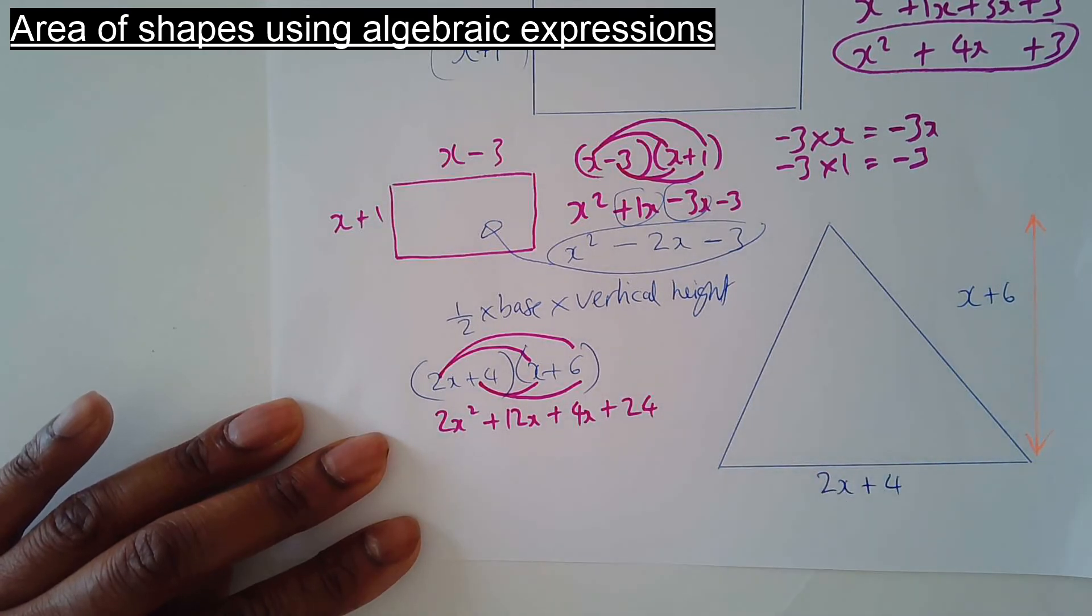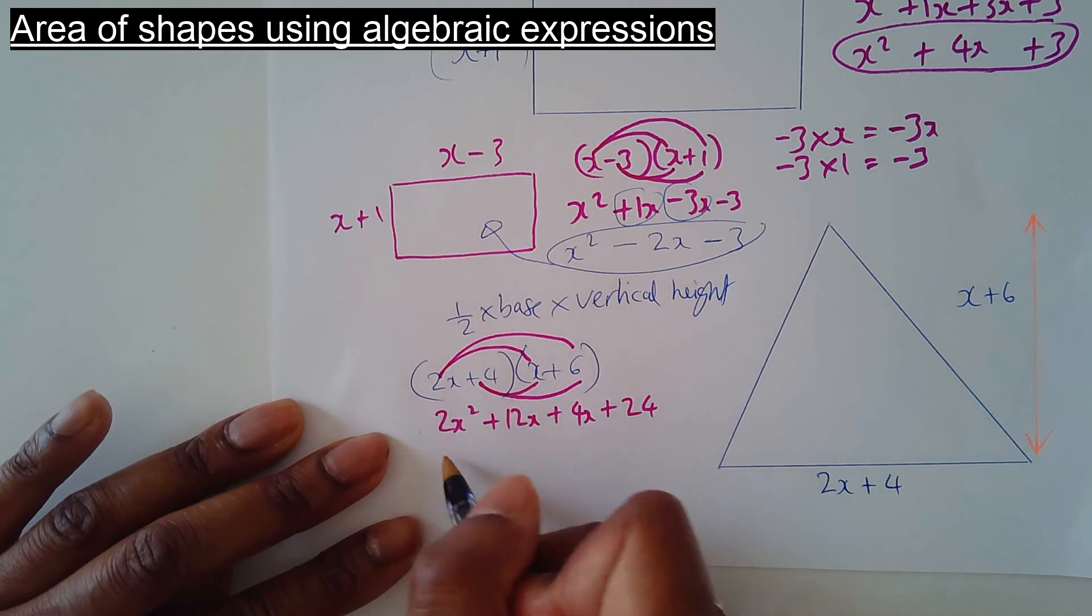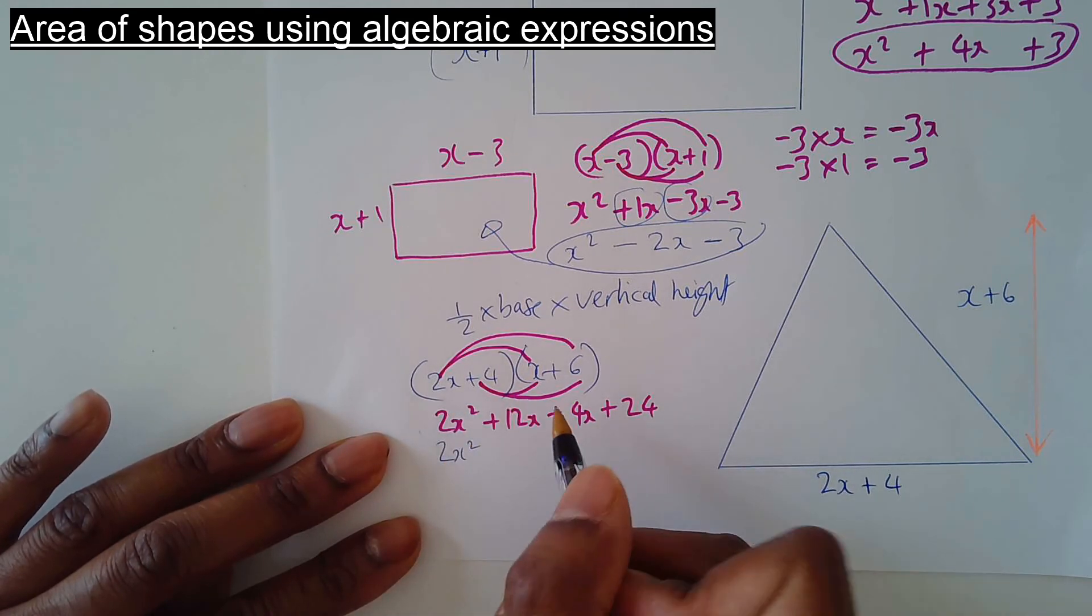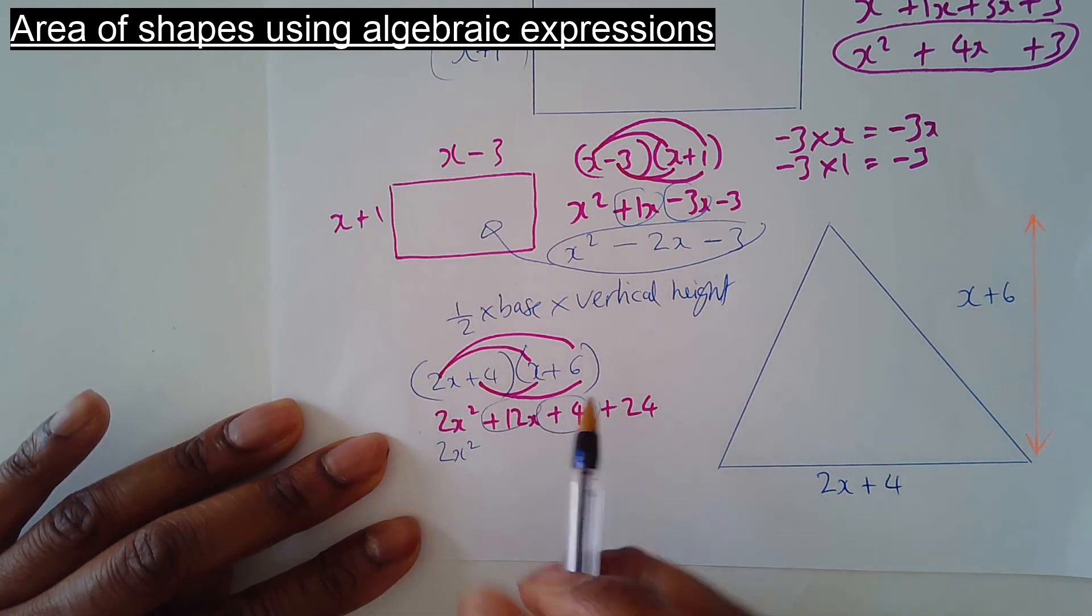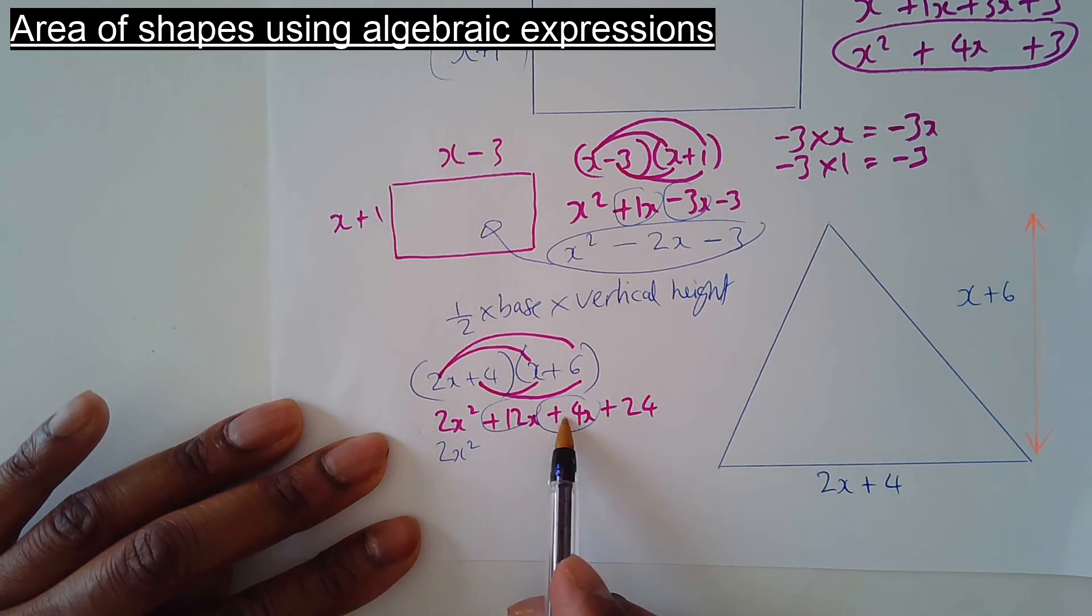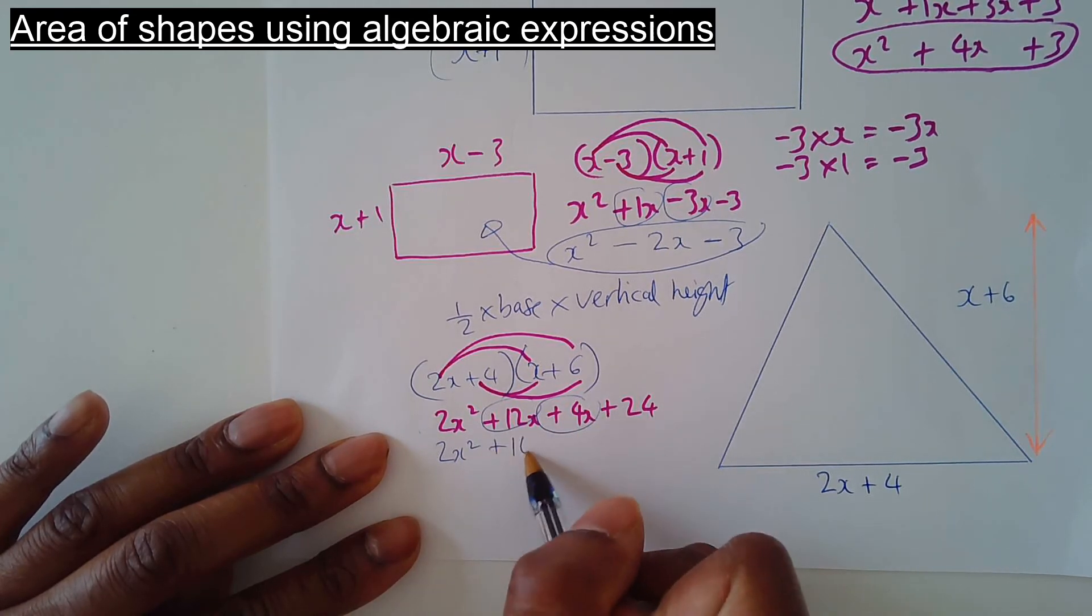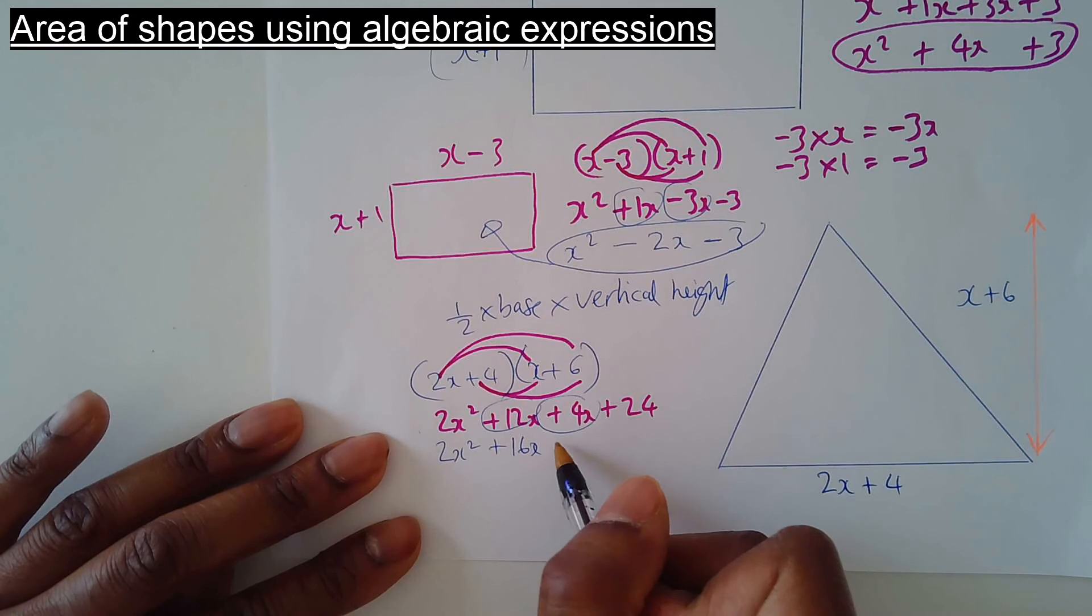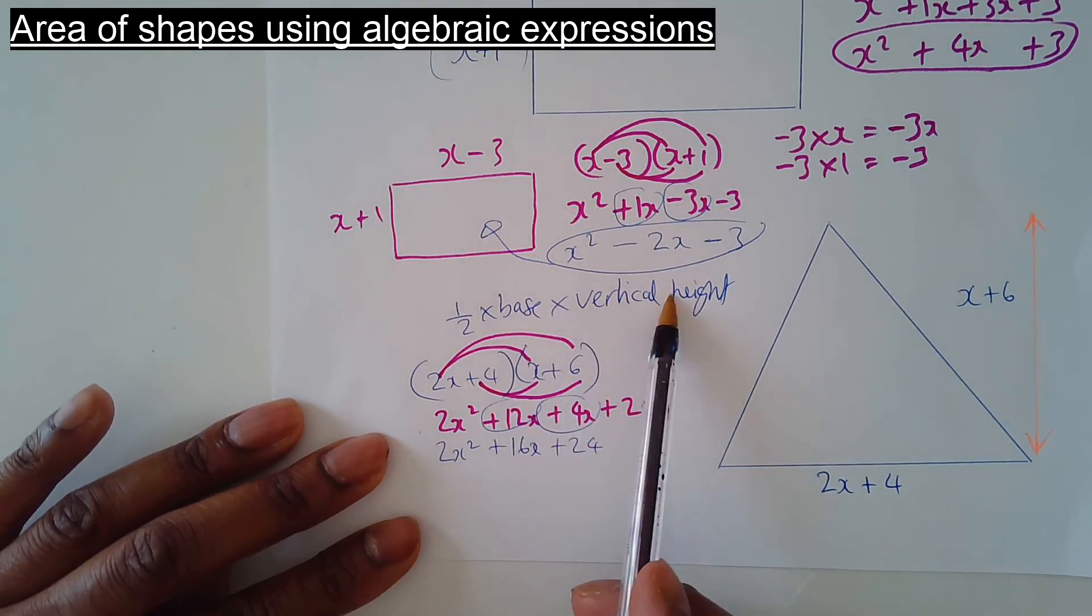Now collect like terms. We've got 2x squared by itself. Like terms, 12x plus 4x is 16x. And then you've got the plus 24 by itself. All I've done is base times height.